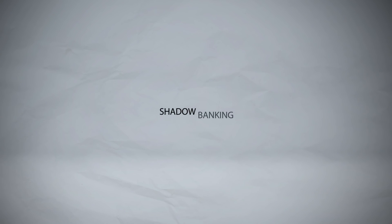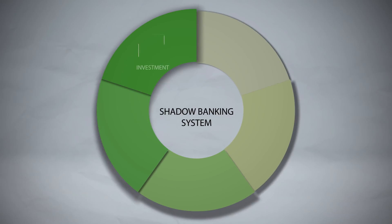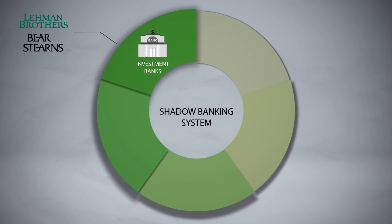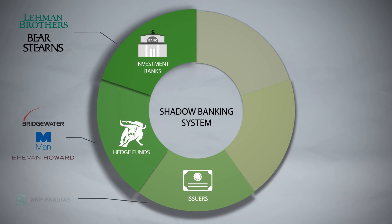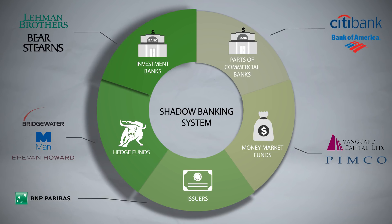A shadow bank, on the other hand, does not take deposits and so does not fall under the FDIC. Shadow banks are generally any entities that perform bank-like activities but are not regulated like traditional banks. Examples include investment banks, along with other complex financial intermediaries such as hedge funds, issuers of asset-backed securities, money market funds, and even some parts of traditional commercial banks which are not covered by the deposit insurance guarantee.